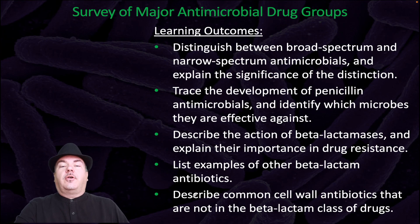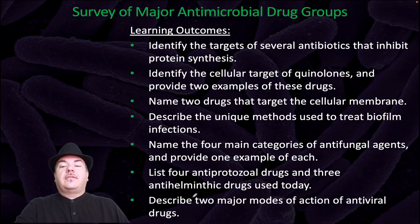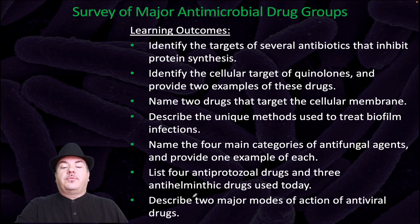By the end of this video, you should be able to distinguish between broad-spectrum and narrow-spectrum antimicrobials and explain the significance of the distinction. Trace the development of penicillin antimicrobials and identify which microbes they are effective against. Describe the action of beta-lactamases and explain their importance in drug resistance. List examples of beta-lactam antibiotics. Describe common cell wall antibiotics that are not in the beta-lactam class of drugs. Identify the targets of several antibiotics that inhibit protein synthesis. Identify the cellular targets of quinones and provide two examples of these drugs. Name two drugs that target the cellular membrane. Describe the unique methods used to treat biofilm infections. Name the four main categories of antifungal agents and provide one example of each. List four antiprotozoal drugs and three antihelminth drugs. Describe two major modes of action of antiviral drugs.